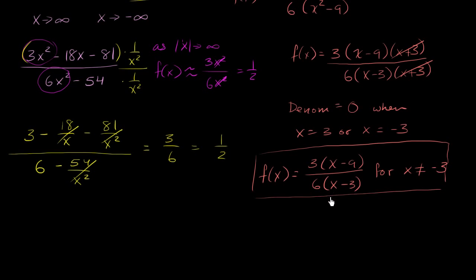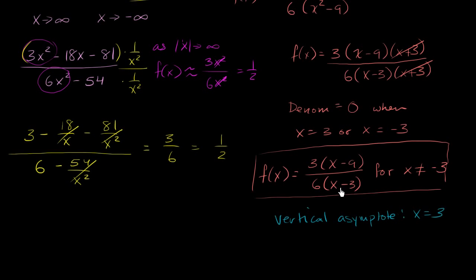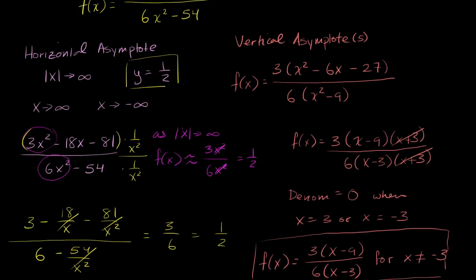A vertical asymptote occurs at a point that makes the denominator equal 0 but not the numerator. x equals negative 3 made both equal 0. So our vertical asymptote is at x equals positive 3 — that's what makes the denominator 0 but not the numerator. The vertical asymptote is x equals 3.